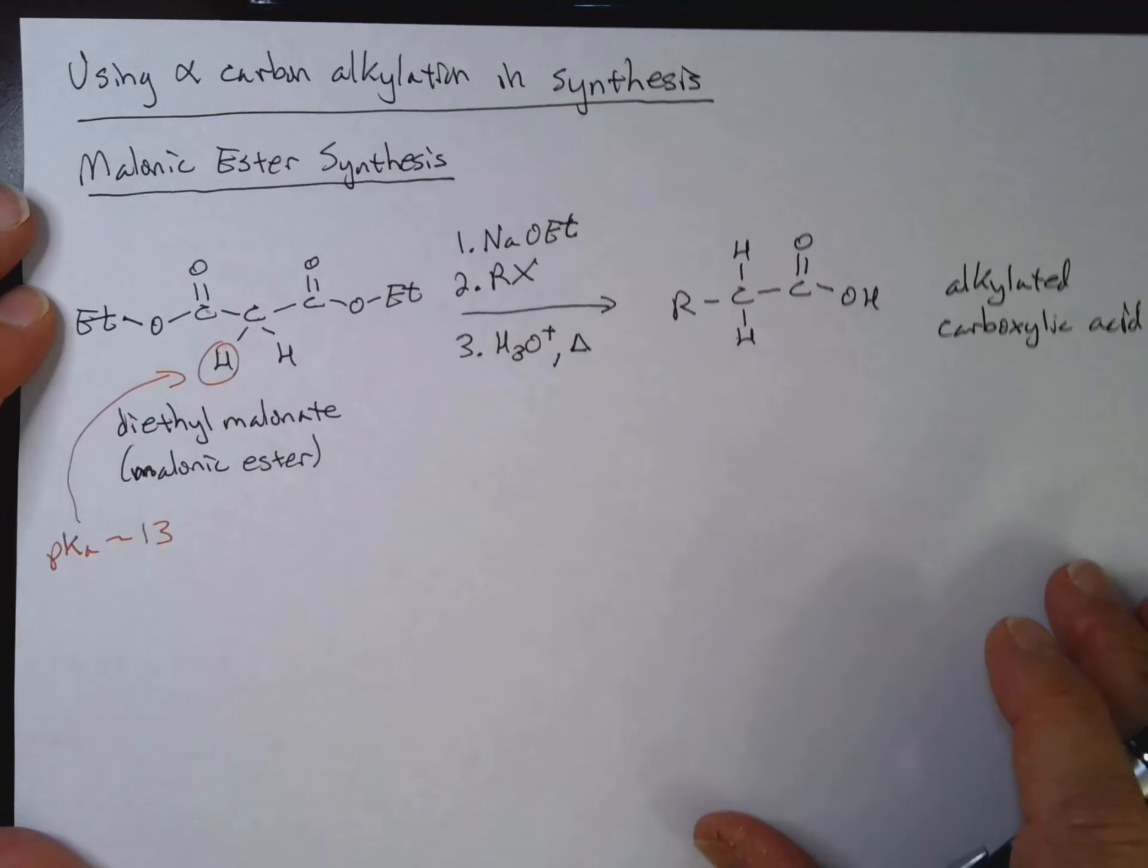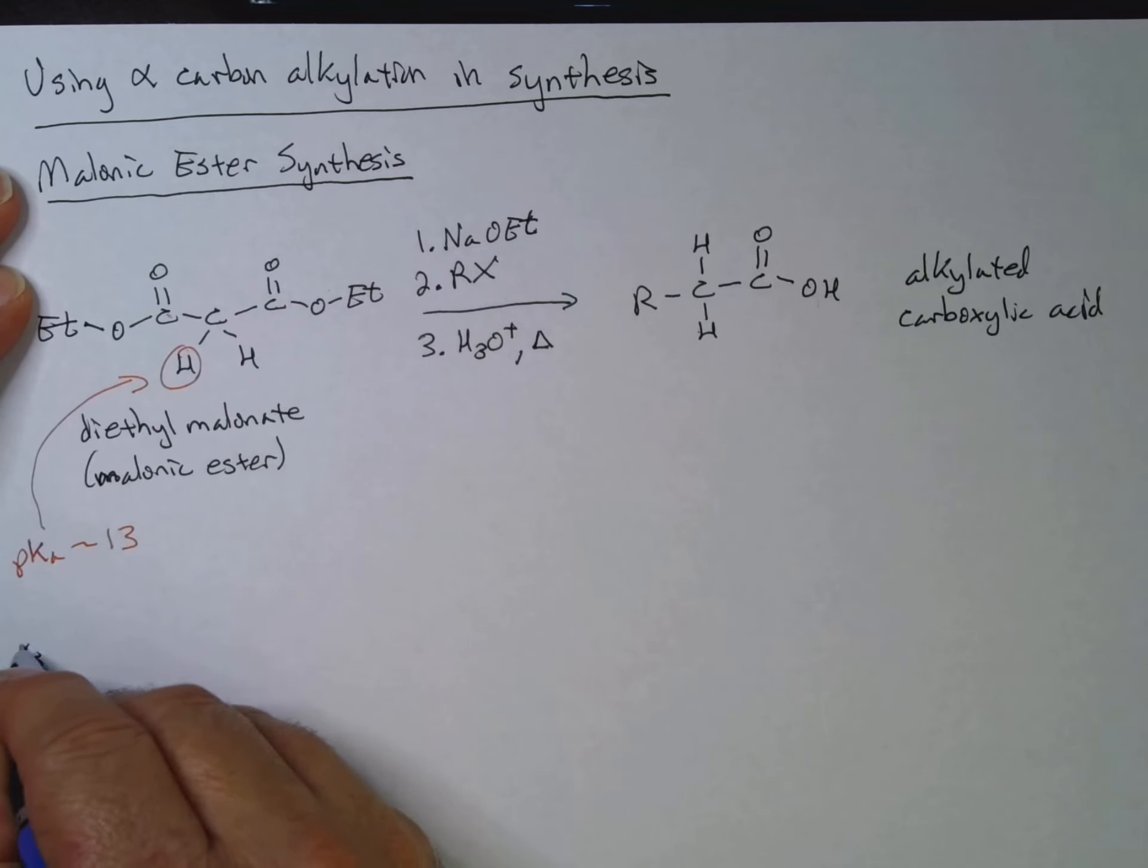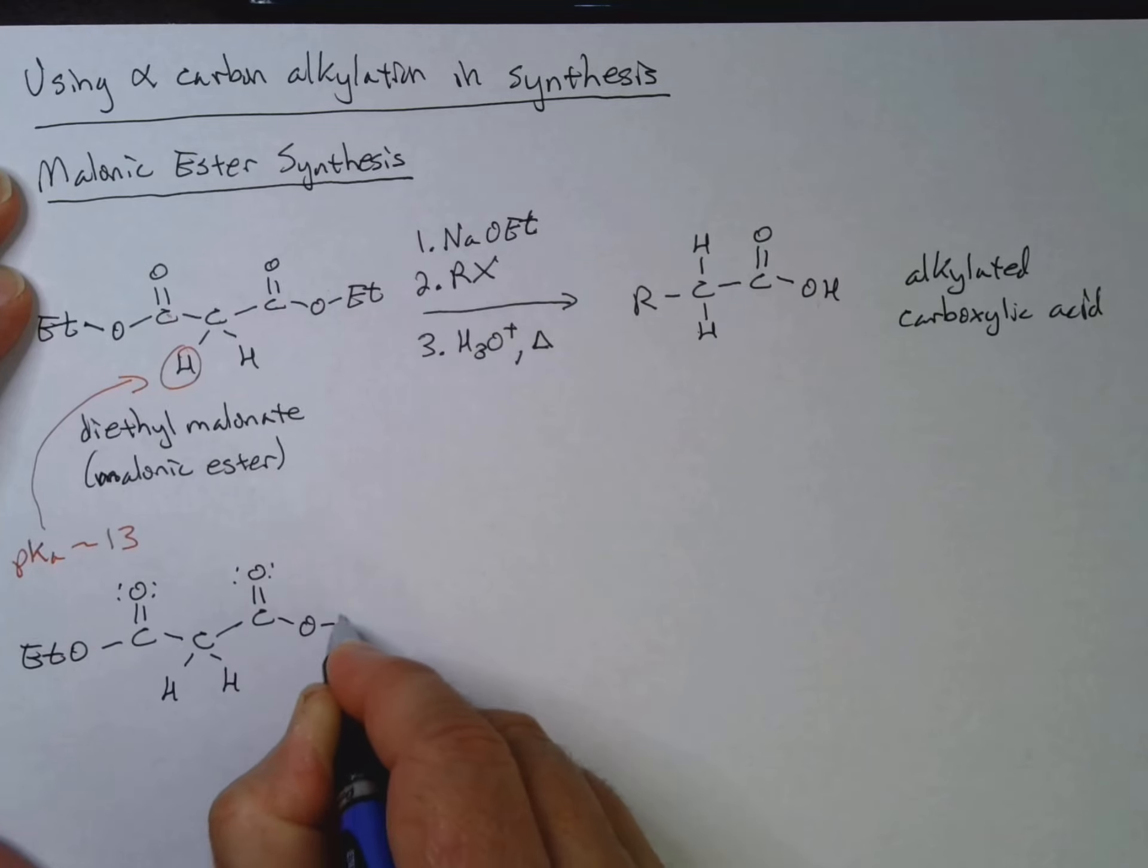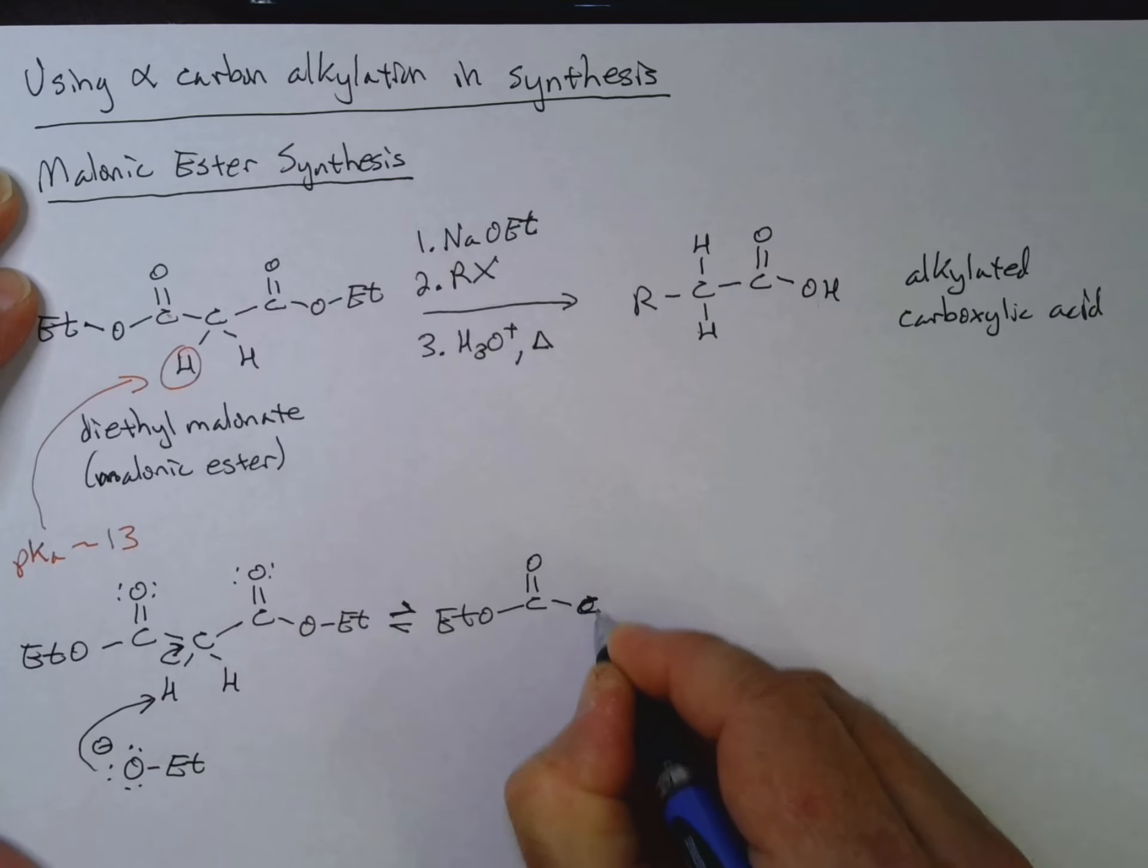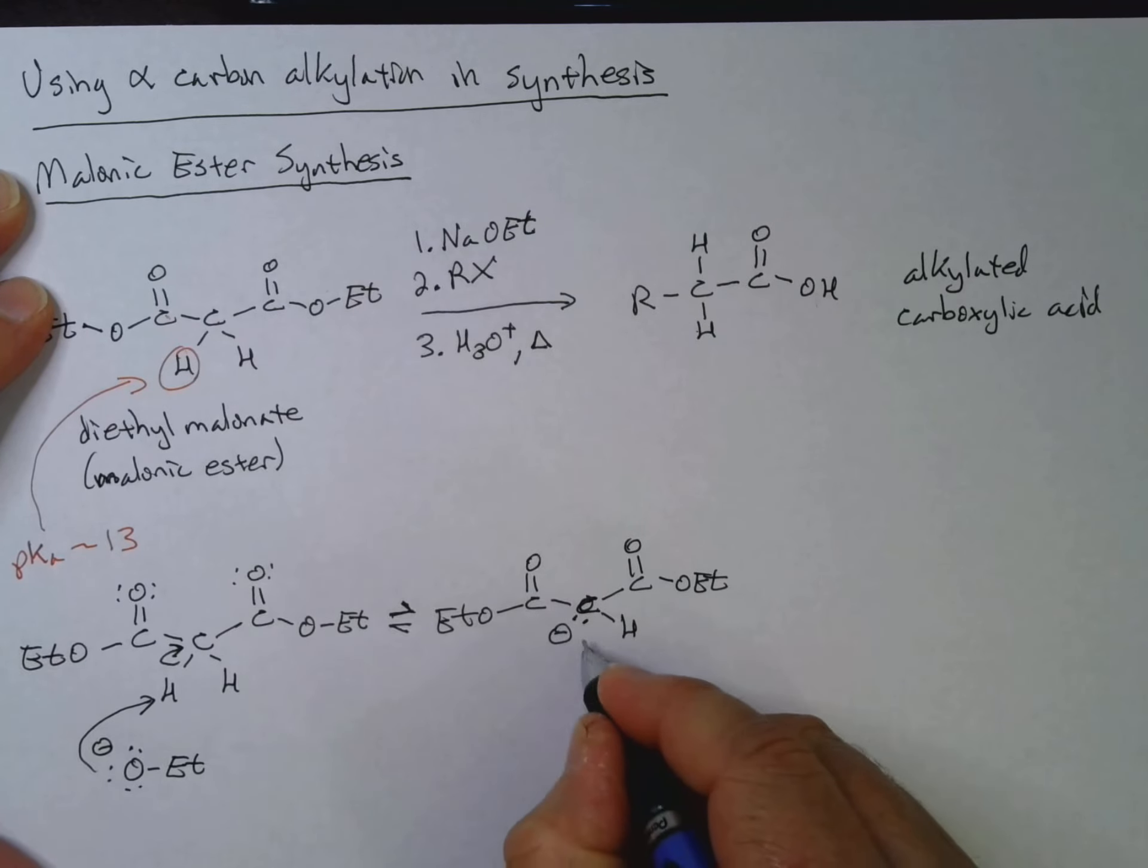Well, let's take a look at the process. Really, we can take a look at our mechanism here. So I've got Et-O-C double bond O-CH2-C double bond O-O-Et. And I've got my OEt- which comes along and deprotonates. So I have Et-O-C double bond O-CH- lone pair negative charge-C double bond O-O-Et. And then if I have R-X, I can do my SN2. Now you'd want your alkyl halide to be primary or secondary. So you can actually do a reasonable SN2 on it.